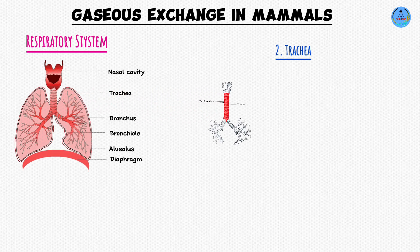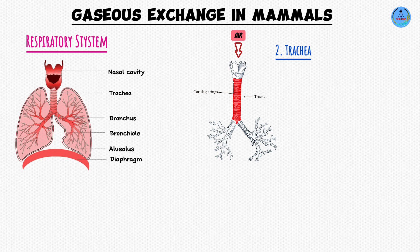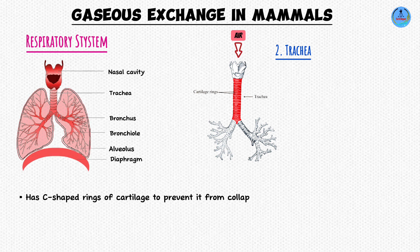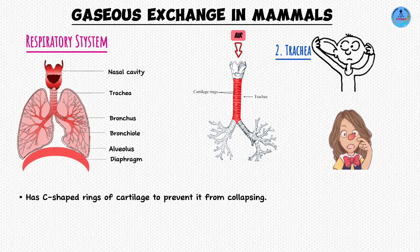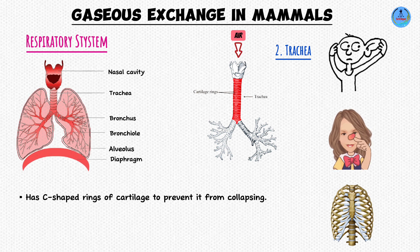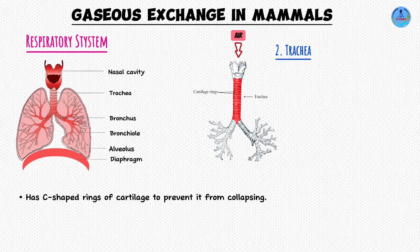Moving on to the trachea. The trachea is a tube-like structure that acts as a passage for air into the lungs. One unique characteristic is that it is surrounded by rings of cartilage. Cartilage is a strong connective tissue — firm and rigid. Since the trachea acts as a passage for air, it needs to be open at all times. The cartilage reinforces the trachea, ensuring that it is always open for the passage of air and does not collapse.